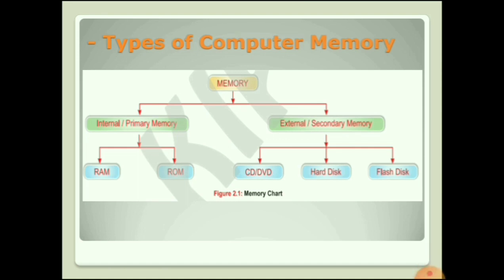Mainly, computer memory is of two types: internal memory and external memory. As you see on the screen, the chart of memory is given here — this chart is also in your textbook. The two main parts are internal or primary memory, and external or secondary memory. Internal memory is further classified into two types: RAM and ROM. Various external memory devices are available, such as CD or DVD, hard disk, and flash disk.